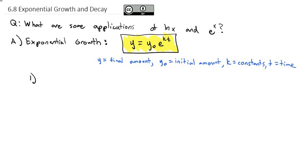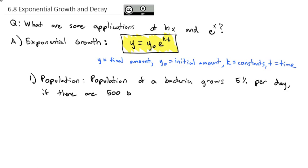For example, exponential growth might be seen in a population. Let's say the population of a bacteria grows 5% per day. If there are 500 bacteria present, how long until there are 10,000 bacteria?